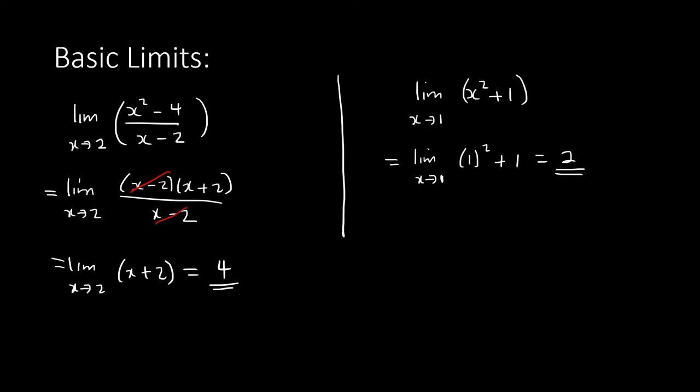That's your limit from N4. Now in N5 it's a little more advanced but uses the same principles. We need to know what happens when we have an undefined result and cannot simplify — for example, when substitution gives zero over zero and factoring isn't possible.